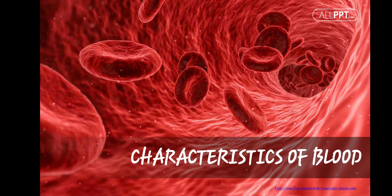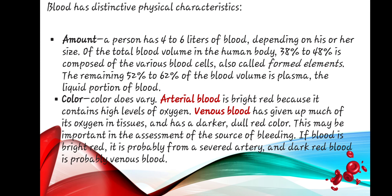Now let's discuss the characteristics of blood. Blood has distinctive physical characteristics. The first is amount. A person has 4 to 6 liters of blood, depending on their size and total blood volume in the human body.